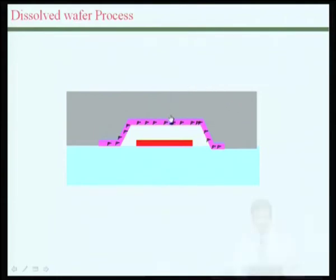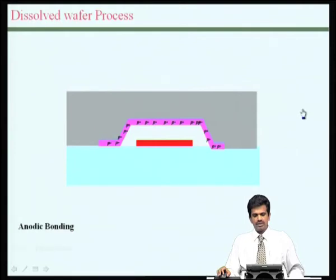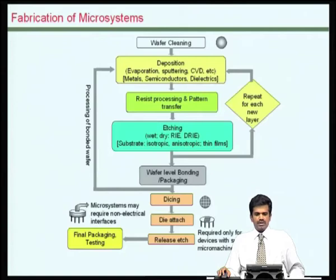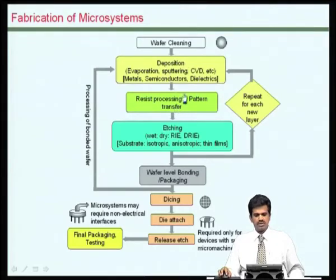We have also talked about a dissolved wafer process in which we can have part of the device on one wafer and the other part on a different wafer, bond these together, and later dissolve part of one of those wafers to come out with a geometry attached to the other, which can also move by application of external forces. All these were essentially following a similar set of process sequences of deposition, pattern transfer, etching, and possibly bonding, some of these being repeated several times.